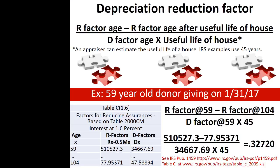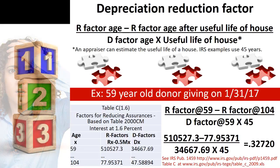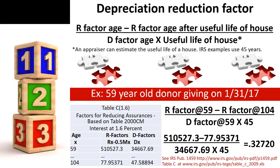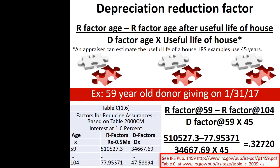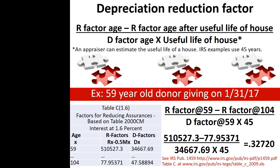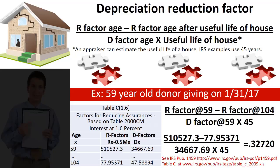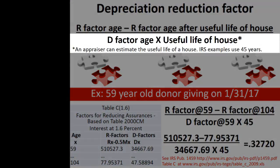How is this depreciation reduction factor calculated? The calculation can at first seem complex, but it is simply a matter of copying the correct numbers into a division problem. Aside from the information in IRS Table C of Publication 1459 and the Section 7520 rate, the only additional information needed is the age of the donor — the measuring life — and the useful life of the house. Unlike other areas of tax law, there are no set years for the depreciable life of a residence in this context. The useful life should be estimated by an appraiser or engineer. The IRS examples use 45 years, often treated as a viable estimate depending on the condition of the home.